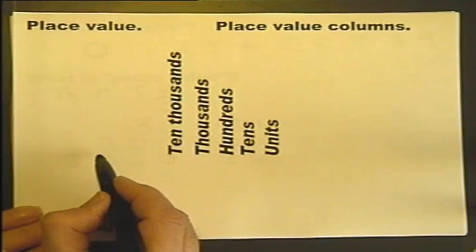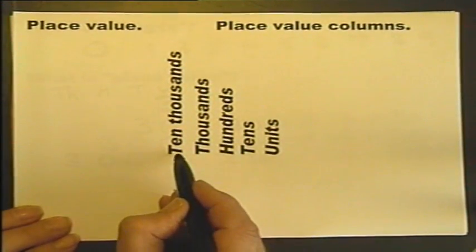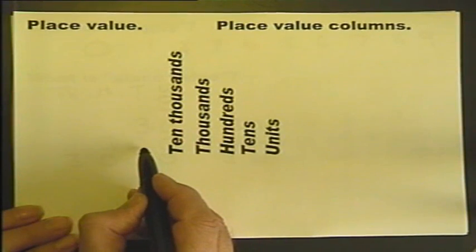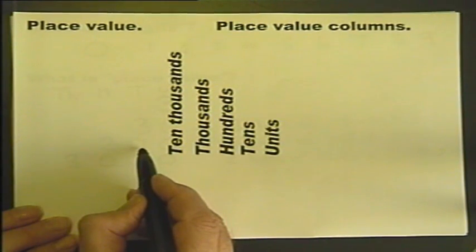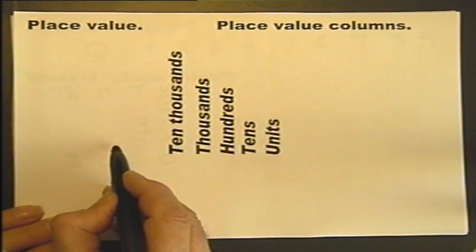Now these columns don't stop, they carry on actually forever. Let's just consider the next column. If this is the tens of thousands column, this will be the hundreds of thousands column. After the hundreds of thousands column, we actually have the millions column.